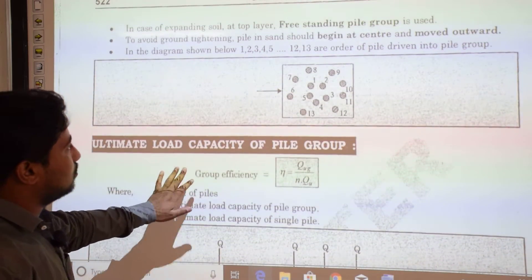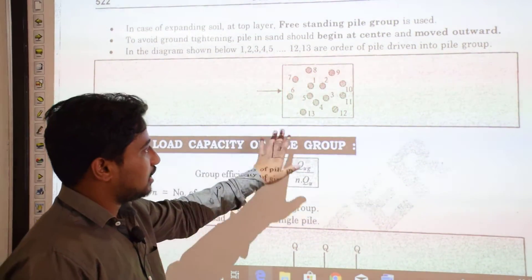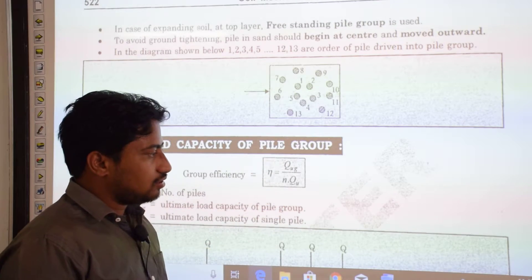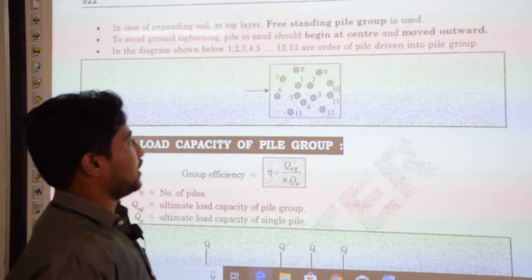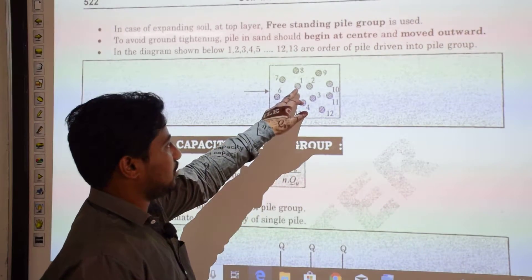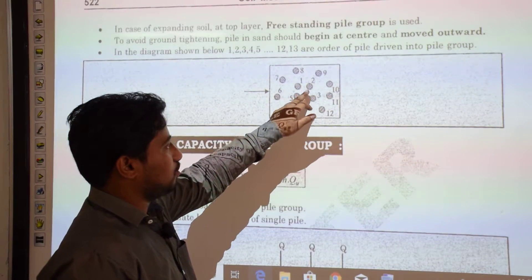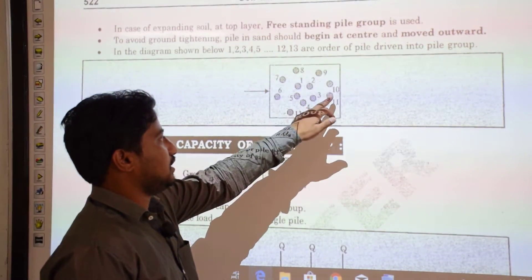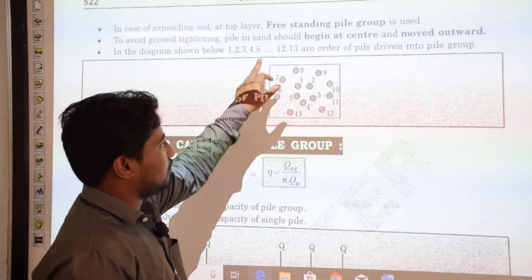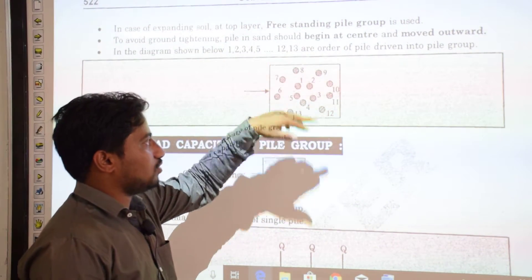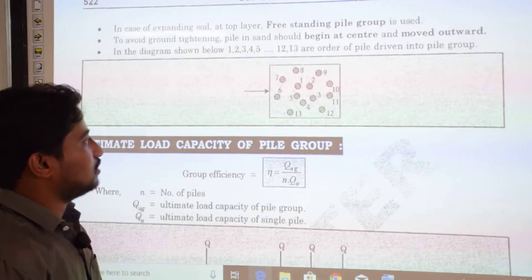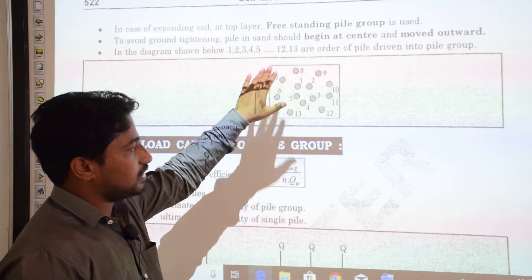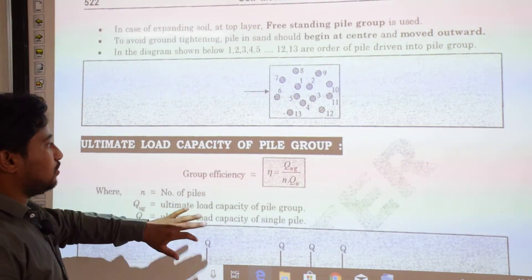The pile installation sequence proceeds in an anti-clockwise direction: pile 1 is driven first at the center, then 2, 3, 4, 5, 6, 7, 8, 9, 10, 12, 13 — moving outward in an anti-clockwise spiral pattern.